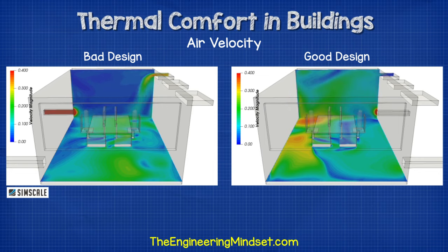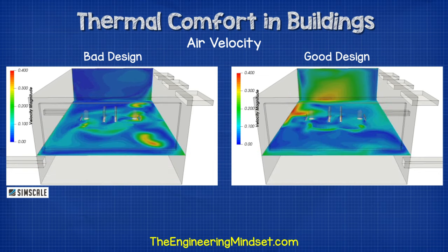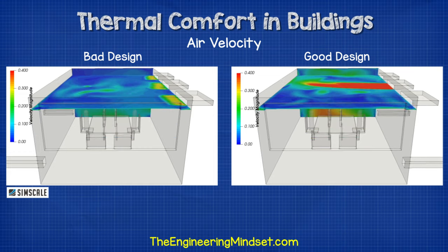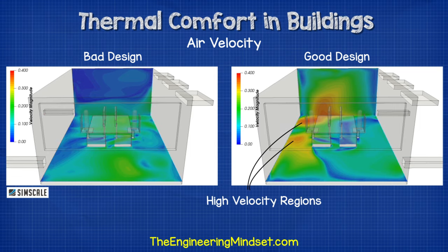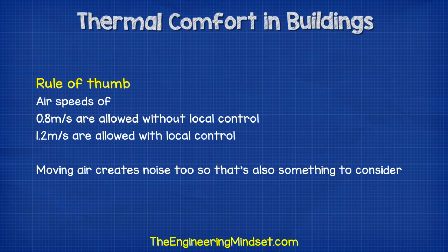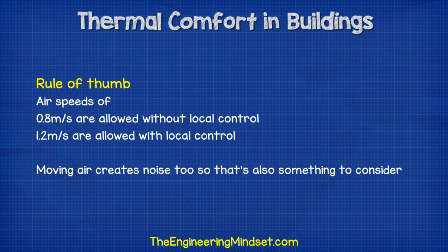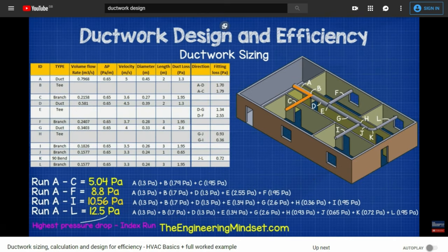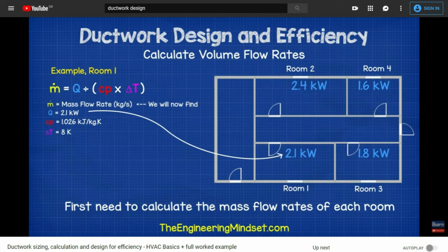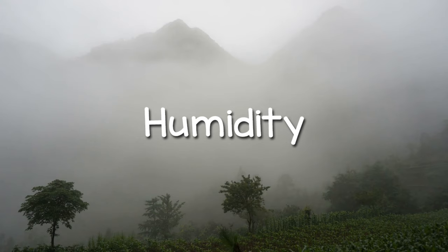In the improved design, we have a high velocity over the top of the occupants, but this time it isn't falling directly onto them. The occupant on the left might just feel this on the top of their head, especially if they were to stand up. There's also a high velocity region under the ankles, so some improvements could still be made for the location and quantity of the grills. As a rule of thumb, air speeds of up to 0.8 meters per second are allowed without local control, and 1.2 meters per second with local control. Moving air creates noise too, so that's also something to consider.